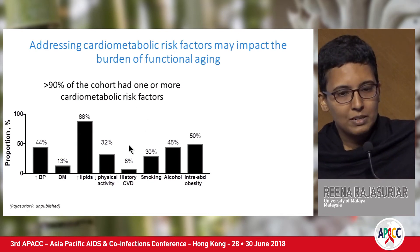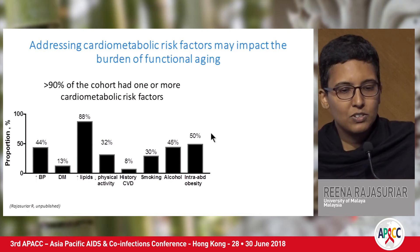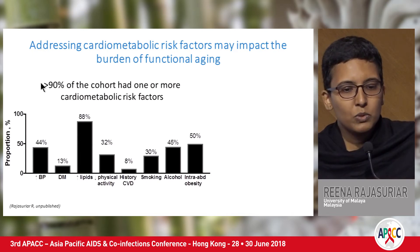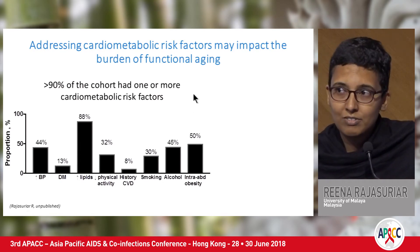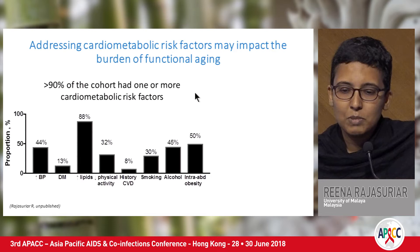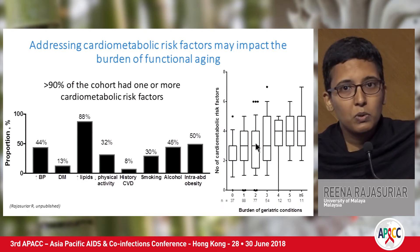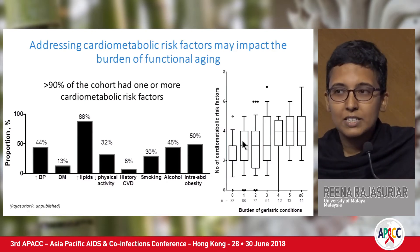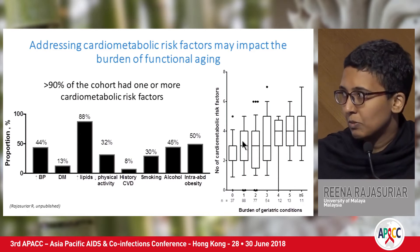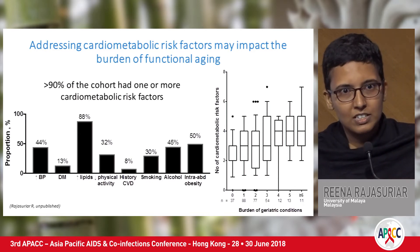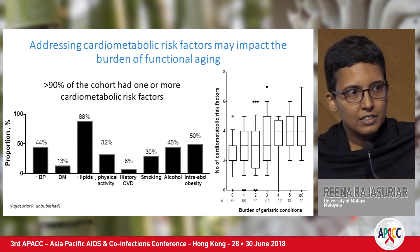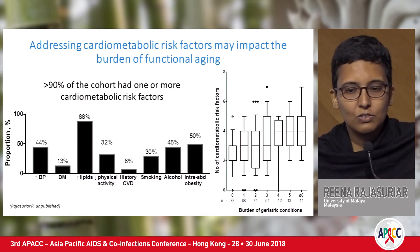We also looked at the different cardiometabolic disorders present in the patients. More than 90% of the cohort had one or more cardiometabolic risk factors, and when we plotted this against the number of geriatric conditions, there was a very strong positive correlation — implying that if we could address some of these cardiometabolic risk factors, we could potentially alter the issues of functional aging downstream.